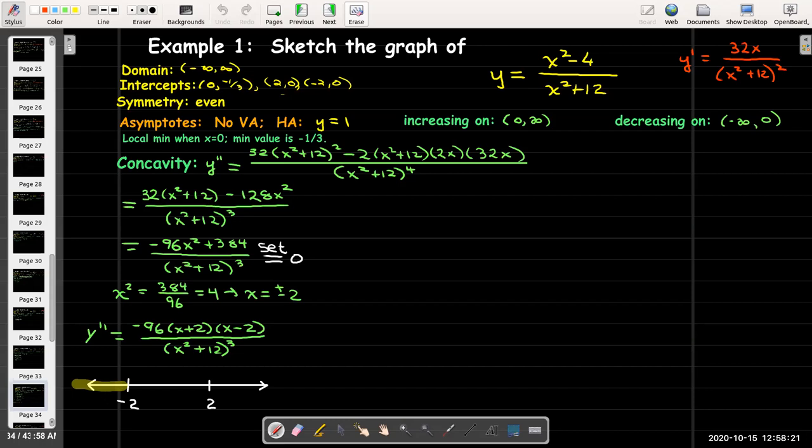Then I consider each of these three intervals. I put a test point in. I say if I have like negative 3, what sign will I get for the second derivative? Well negative 96 is always negative. The bottom is always positive. So I'm going to have a negative times a negative times a negative, and that's going to give me a negative. Moving on to the next interval, if I put in zero, I'll have negative times positive times negative. That's going to give me a positive. In the final interval, I'll wind up with negatives again.